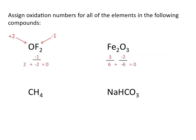So plus 3 times 2, which is the subscript on iron, gives us positive 6. And positive 6 plus the negative 6, which is the sum of the oxidation numbers on the oxygen, equals 0. So in this case, oxygen has an oxidation state of negative 2, and iron has an oxidation state of plus 3.